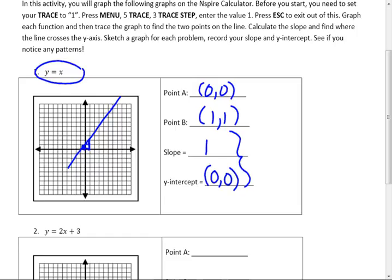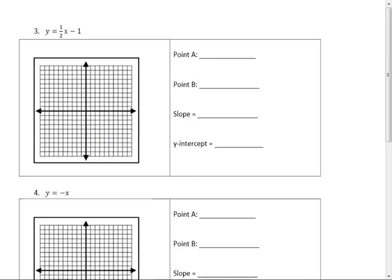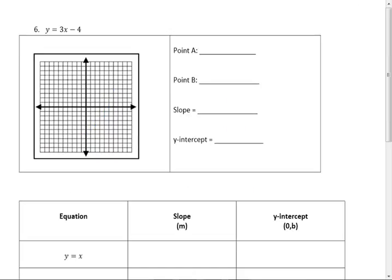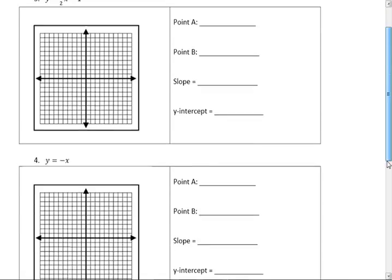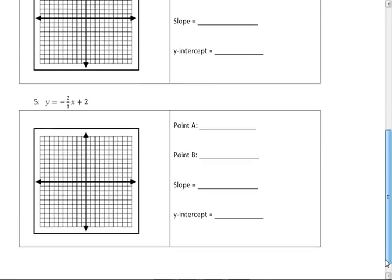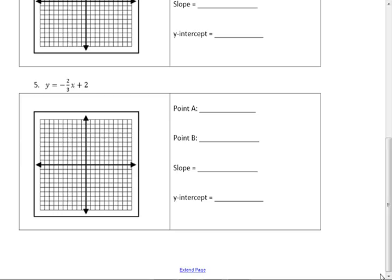Let's skip ahead to one of these that's a little harder. Did you have problems with anyone in particular? What about this negative 2 thirds x plus 2? That would be number 5. Did you do that one?